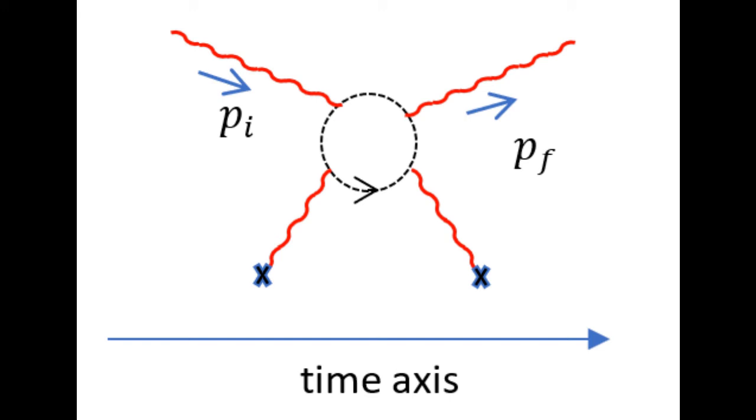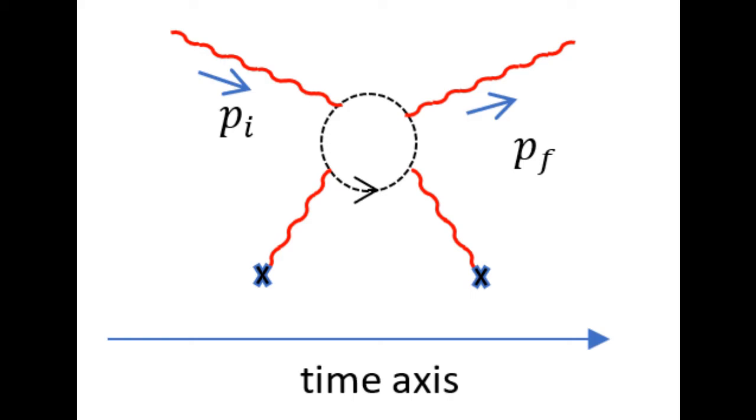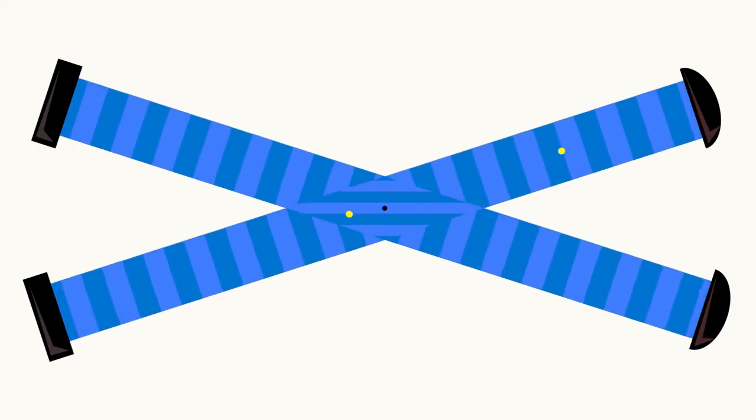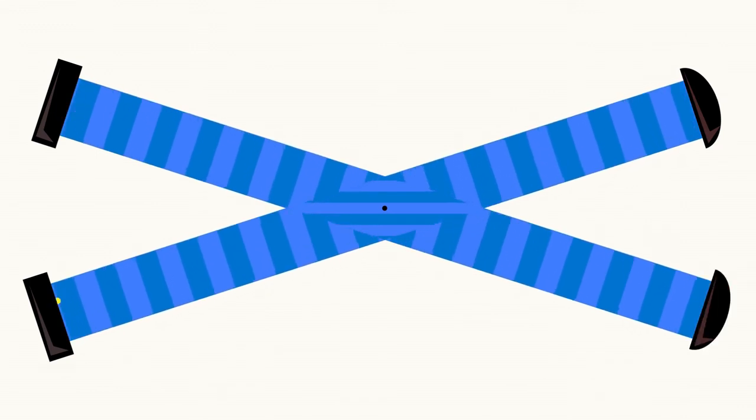The necessary momentum for momentum conservation is provided by the wire in the entire setup. This process is known as quantum scattering. However, this process only describes the mechanism for photon deflection around the wire.